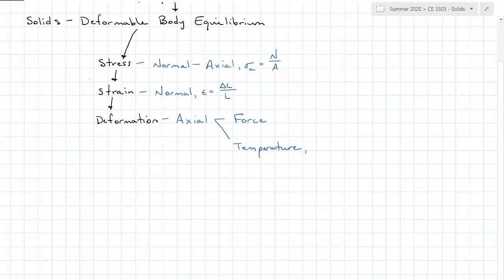Axial deformation due to temperature is alpha delta T L, where alpha is the coefficient of thermal expansion, a material property you find in the back of your book. Delta T is the change in temperature the system experiences, and L is the original unloaded unchanged length of the member.